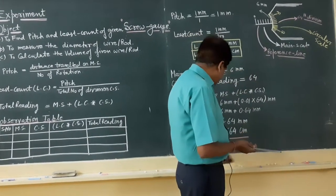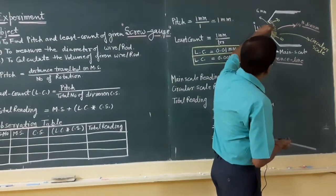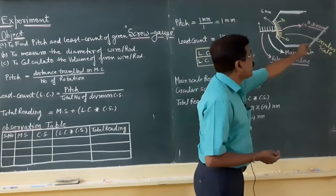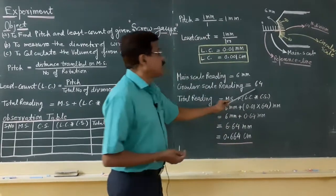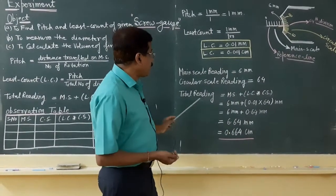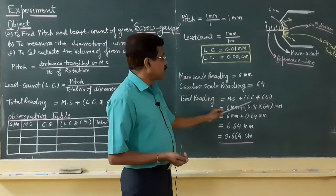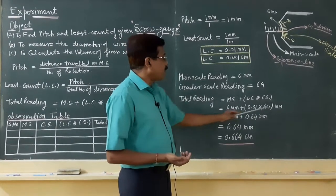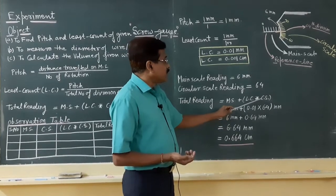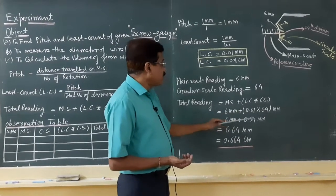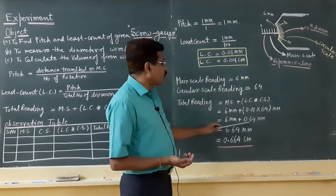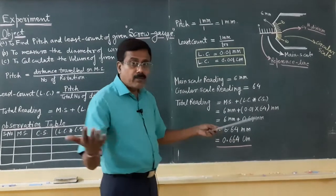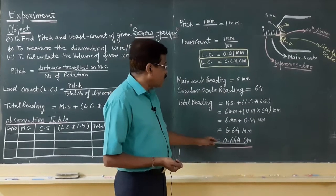By the formula, total reading = main scale reading + (least count × circular scale reading). So it is 6 mm + (0.01 × 64) = 6 mm + 0.64 mm = 6.64 mm. In terms of centimeters, this is 0.664 centimeters. In this way, we can measure the diameter of the given rod.